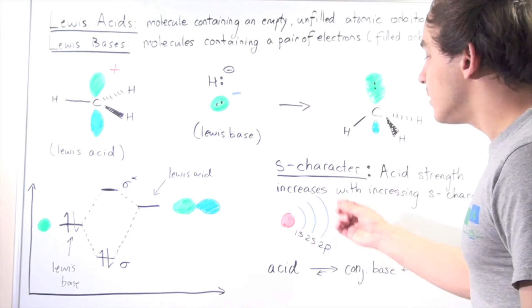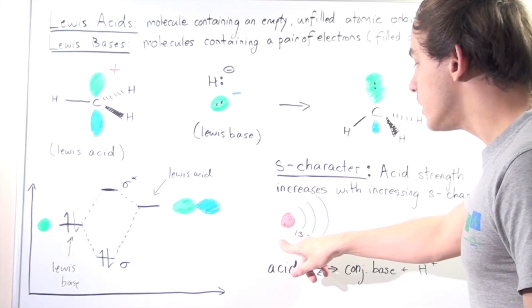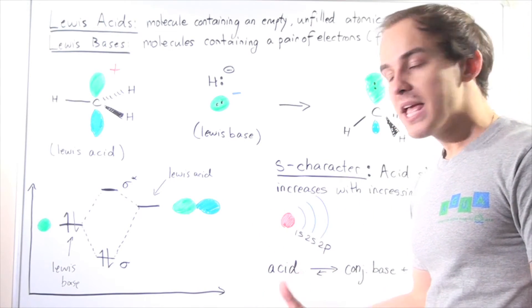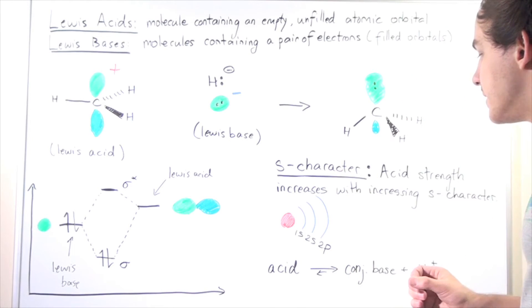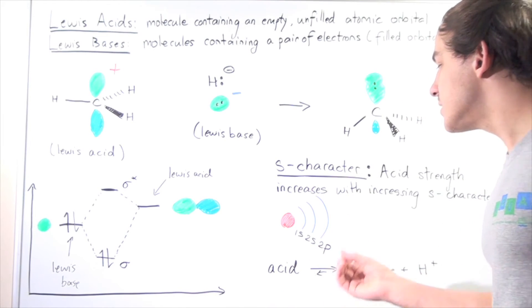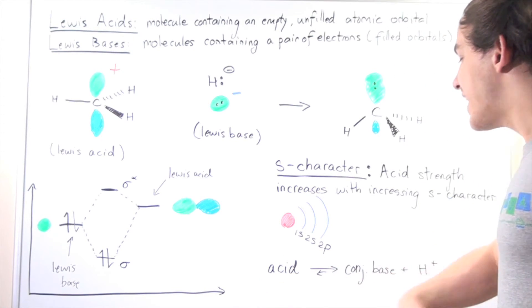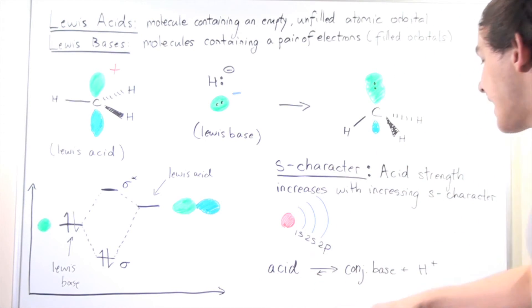The closer our electron is to our nucleus, the more stable that atom is. Let's look what happens when a Bronsted-Lowry acid reacts. When a Bronsted-Lowry acid reacts, it creates a conjugate base, so a Bronsted-Lowry base, and it creates an H ion.